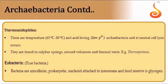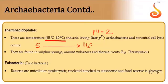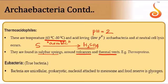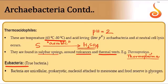Thermoacidophiles are chemosynthetic autotrophs that love very high temperatures and very low pH (around pH 2). Under aerobic conditions, they oxidize sulfur into sulfuric acid, which increases the acidity of their surrounding environment. They are found in sulfur springs, around volcanoes, and in thermal vents. Examples: Thermoproteus and Thermoplasma.